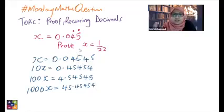So the reason why I did this is because I need to get rid of the recurring element of this decimal. So I want to get rid of this 45. The only way I can do that is, okay,